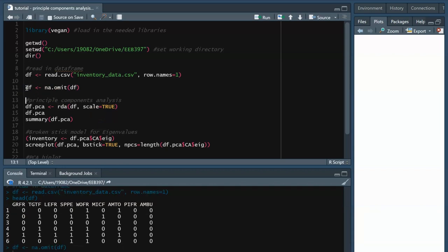Just as a precaution, we are going to NA omit our data frame, which removes any rows with missing values because this would lead to an error in our PCA. Finally, we can write the single line of code needed to actually run the PCA.